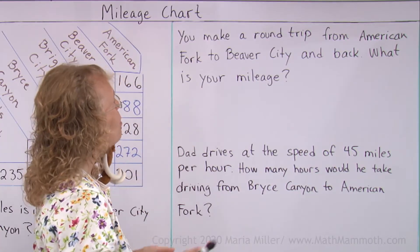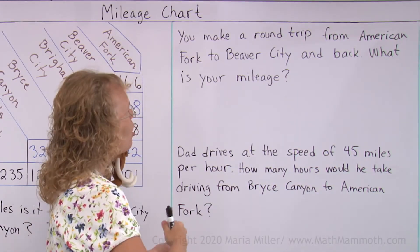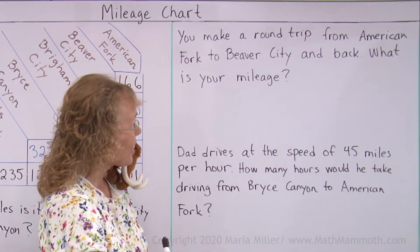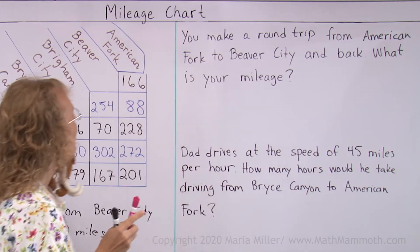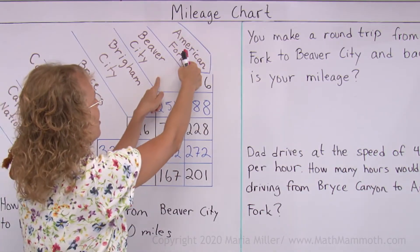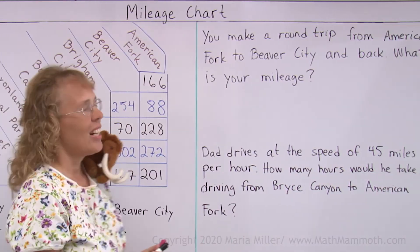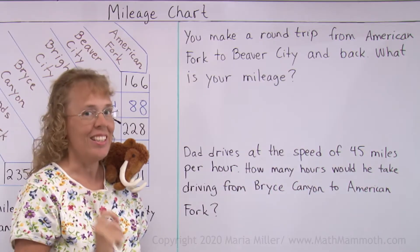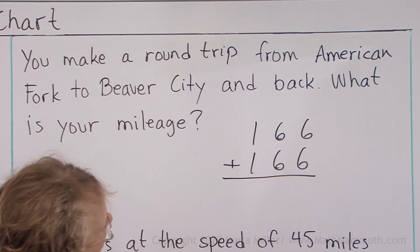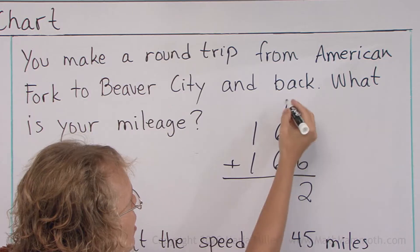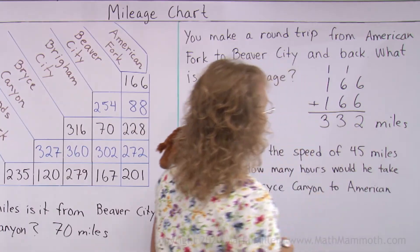You make a round trip from American Fork to Beaver City and back. What is your mileage? We need to find the distance from American Fork to Beaver City. American Fork, Beaver City — they're next to each other. I go down and this way, so it is 166 miles. Since you're making a round trip, we need to add: 166 one way and 166 miles the other way. So that's 332 miles — your mileage for a round trip.